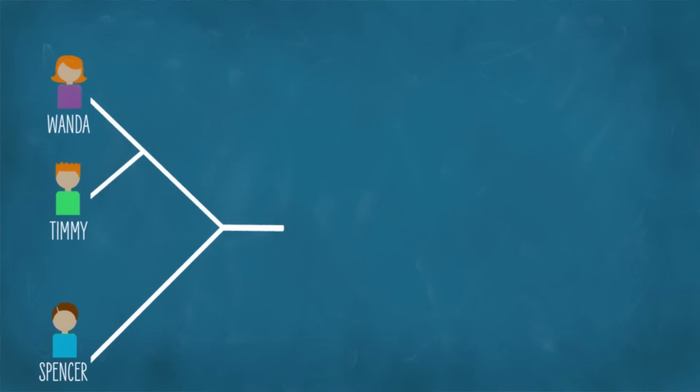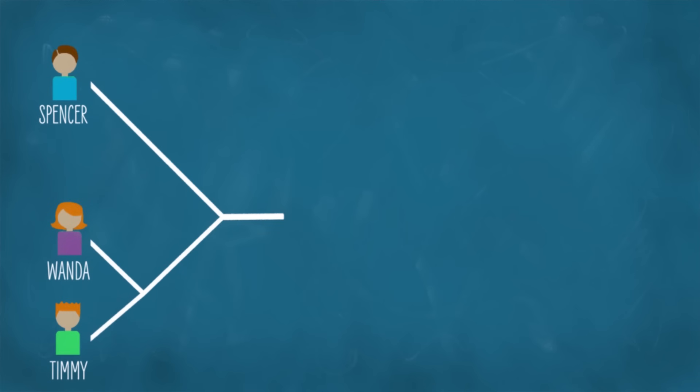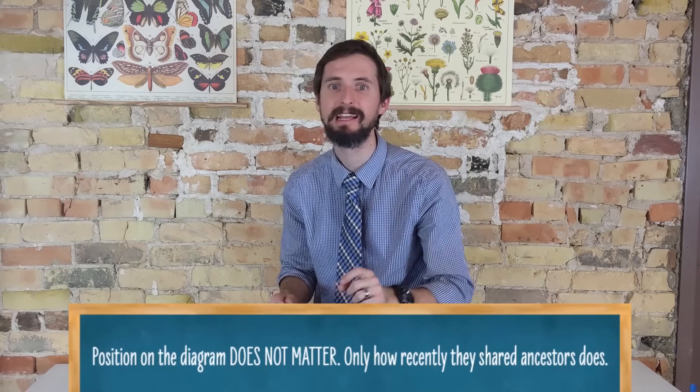Also, if I flip the way that I drew the diagram so that Timmy is on the top and Wanda on the bottom, that doesn't change the story at all. If I flip it so that Spencer is on the very top instead of the very bottom, that also changes nothing. Their position on the diagram doesn't mean anything. All that matters is how recently they shared ancestors with the other individuals on the tree.